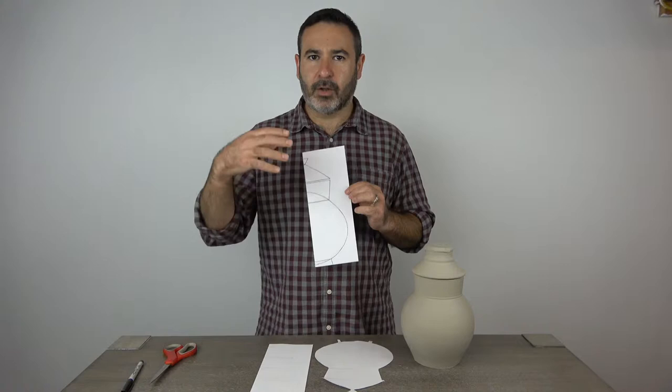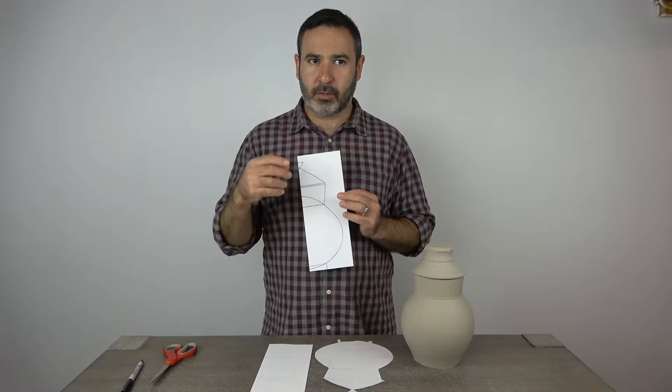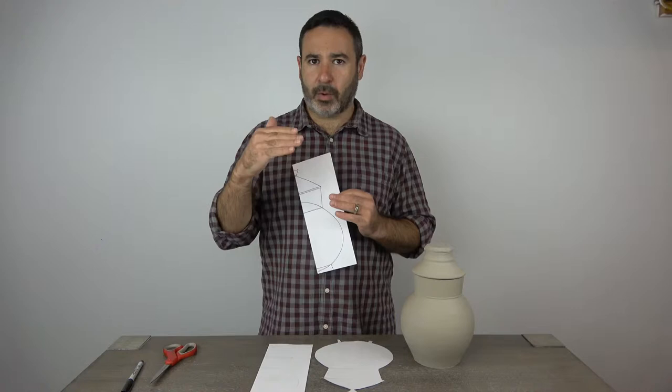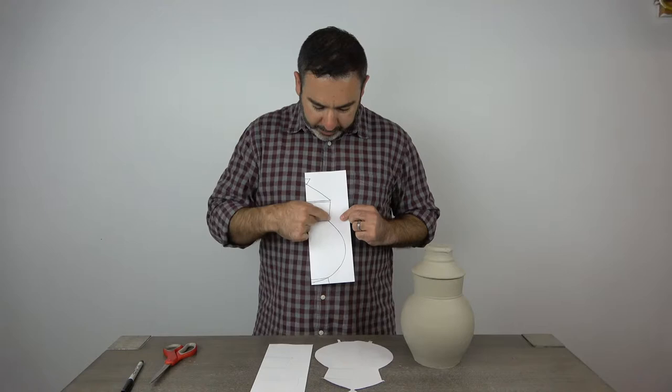And once you realize that, you can start to play with the relationships between the geometric shapes and where they touch each other. And what I mean by that is, if this is like an ovoid form here, and this is a cylinder, this cylinder here is touching this oval form at this place.